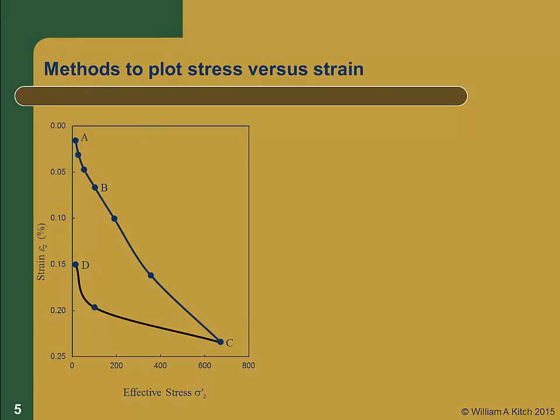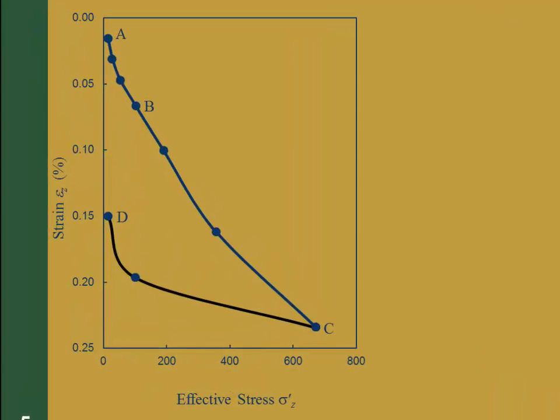Once we have our table of strain versus effective stress, we can plot a stress-strain curve for our soil. You're probably used to seeing such data plotted as stress versus strain, but in geotechnical engineering we generally plot the data as strain versus stress. We also generally plot stress increasing downward because when soils compress, they move down.